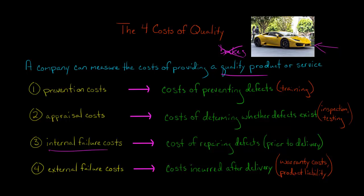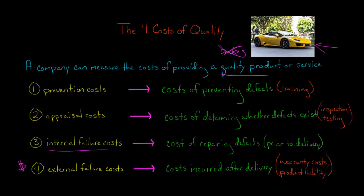The worst type of cost — the most money that is going to be spent by a company — is potentially external failure costs. When I say potentially, it's because if you don't have any external failures you won't have to worry about this, but external failures do happen.